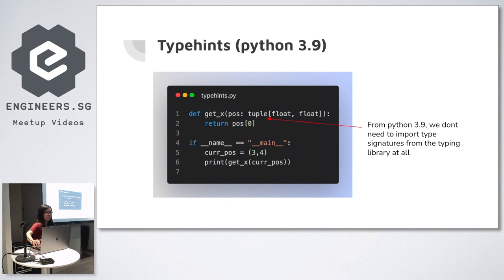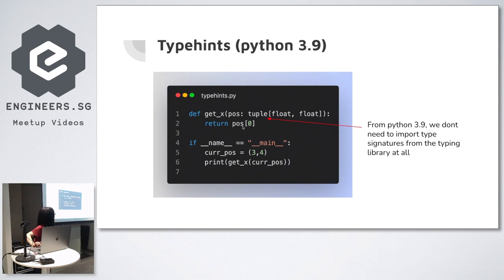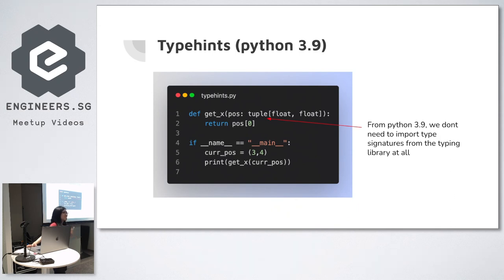In Python 3.9, if you look at the typing documentation and change the version from 3.7/3.8 to 3.9, all the examples change. That's why tutorials look like they're switching constantly from one version to another. Different Python versions make type hints look very different, which makes type hints a bit unpopular because people are confused.